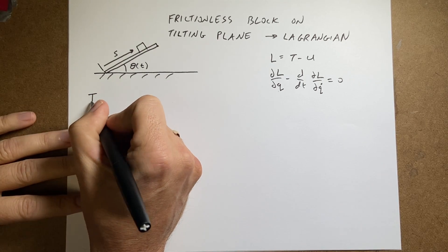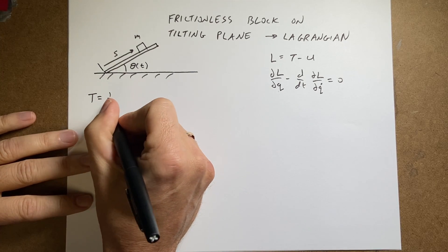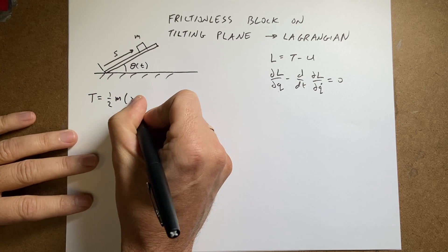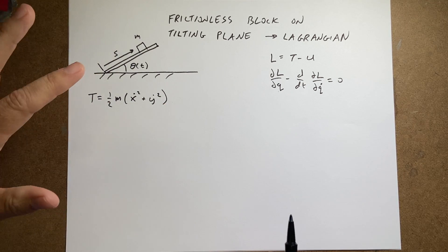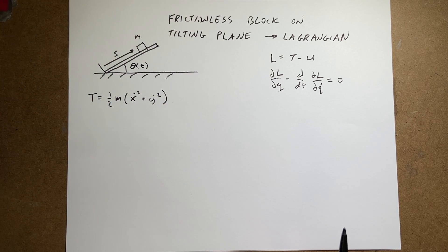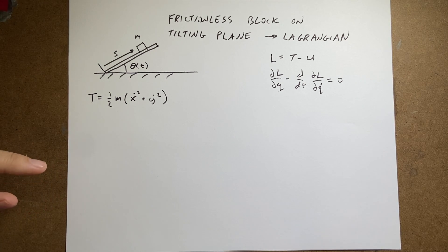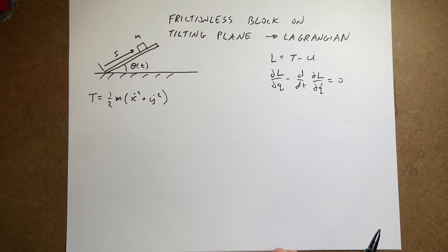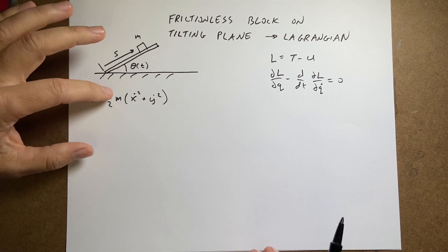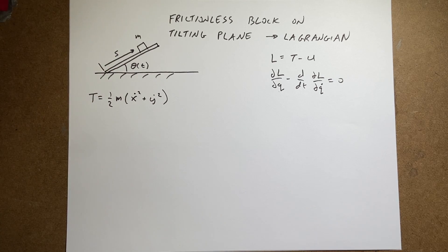Now I can find the kinetic energy and the potential energy. The kinetic energy for a mass m is T = (1/2)m(ẋ² + ẏ²), where ẋ and ẏ are the derivatives of the x and y positions with respect to time in Cartesian coordinates — not in s. I can't just write s-dot, because that doesn't fully describe the kinetic energy. So if I get this in terms of x and y, and get x and y in terms of s, I can figure it out.